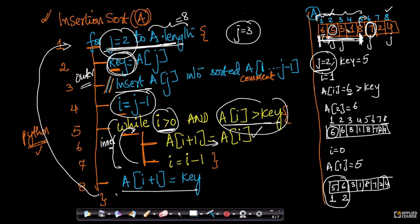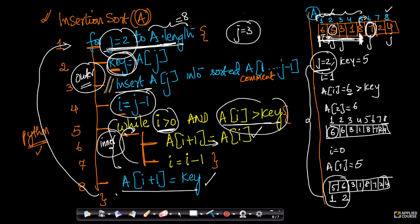At the end, wherever the key element should be placed, I place it there. Very simple code to understand. I strongly recommend you repeat this exercise: I have done it with j equals 2, now do it with j equals 3, 4, and 5 on your notebook so you understand this code better. If you are comfortable with any programming language, this is straightforward — simply two loops, an outer loop and an inner loop. Very simple, nothing complicated.